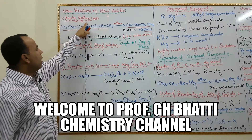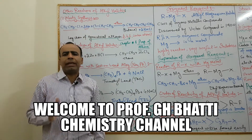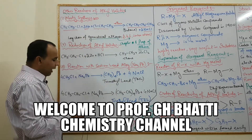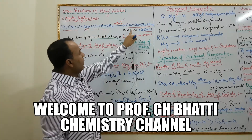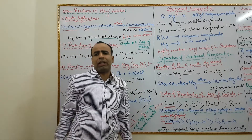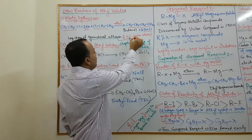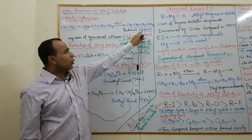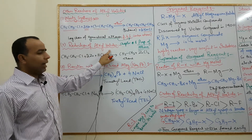Wurtz synthesis is our first reaction related to chemical reactions of alkyl halide. When two molecules of ethyl chloride react in the presence of sodium metal and ether as a solvent, then a symmetrical alkane — that is, butane — is produced. A symmetrical alkane is one whose chain contains two, four, or six carbon atoms. Sodium chloride is also produced.